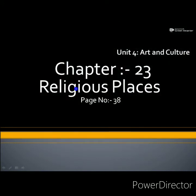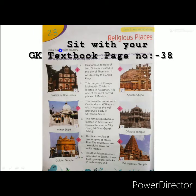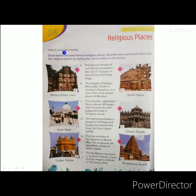Hi students, in GK today we will start Unit 4, Art and Culture, Chapter 23, page number 38. The topic is religious places. India is a secular country — secularism means all the religions are given equal importance and respected equally. India is a secular nation where Christians, Muslims, Hindus, Sikhs, and Jains all live together happily and in harmony.